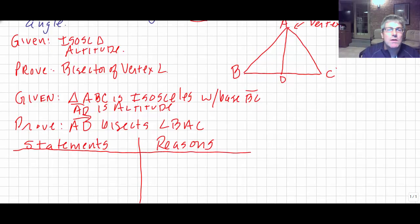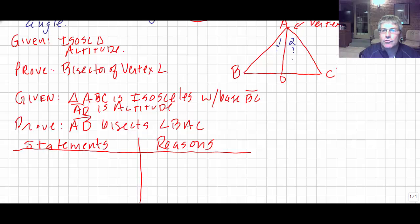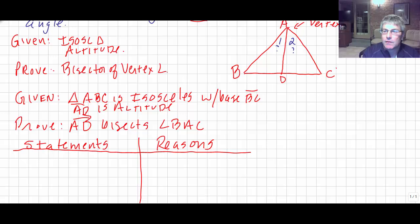So we'll write our two-column proof with statements and reasons. How will we know if we have a bisector of angle BAC? Well, if we can get angle one congruent to angle two, we'll have a bisector. How are we going to get angle one congruent to angle two? Hopefully we can get the triangle on the left congruent to the triangle on the right — that's our general approach. Working from the bottom, angle one congruent to angle two will be our second-to-last step, by CPCTC. Then the step prior to that will be getting the triangles congruent. We've done plenty of proofs like this before, and I'll leave this for you to complete the proof. I'll check your notes and check for the correct proof when I see you in class.